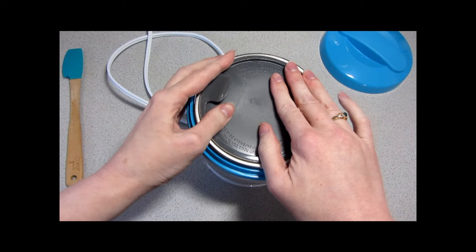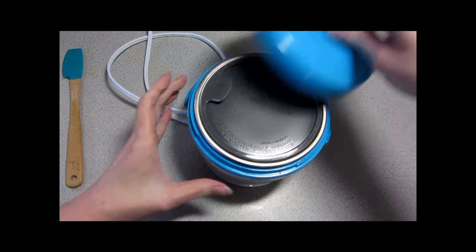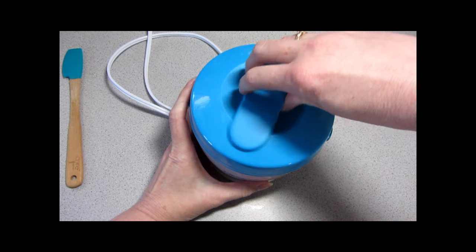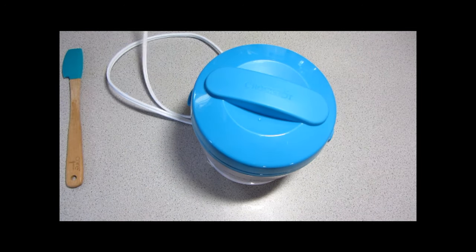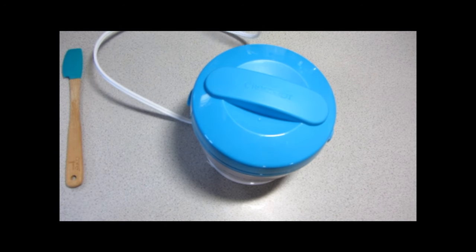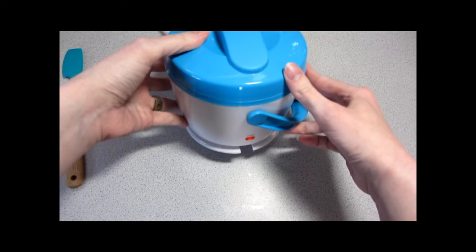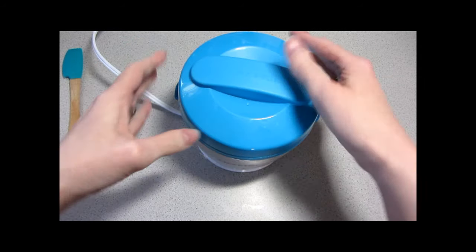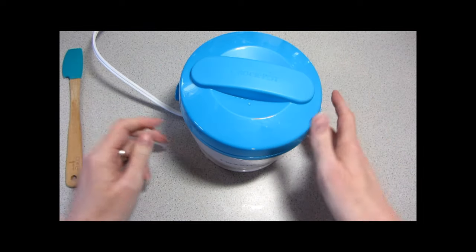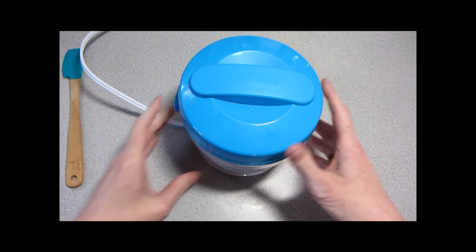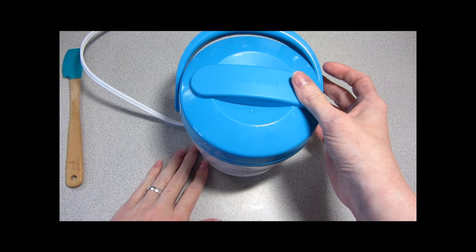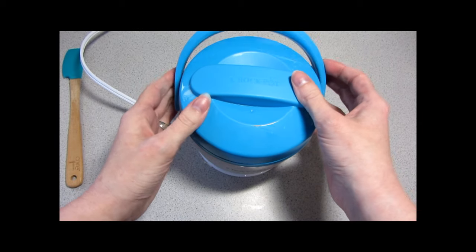Just put the inner lid on, put the outer lid on, and plug it in. And the light has come on. There is no on or off switch. There's no high or low. This is just it's on if it's plugged in and it's off if it's not plugged in.